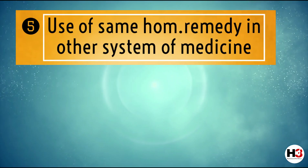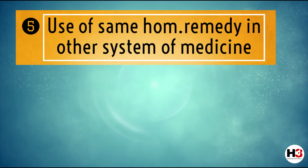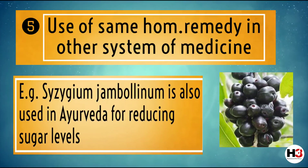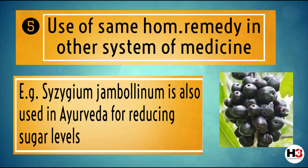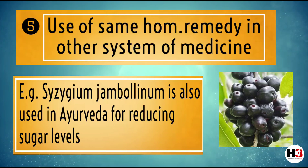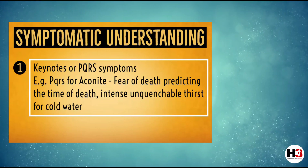If some remedy is also used in other systems of medicine, that too has to be referred to in order to understand the action of that remedy. For example, Syzygium jambolinum is a remedy which is also used in Ayurveda for reducing blood sugar levels. All these points and their information are available on the internet and on websites like Wikipedia.